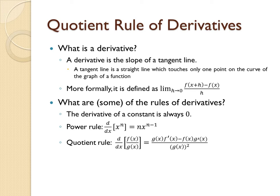The quotient rule states that the derivative of f of x over g of x is g of x times f prime of x minus f of x times g prime of x all over g of x squared.